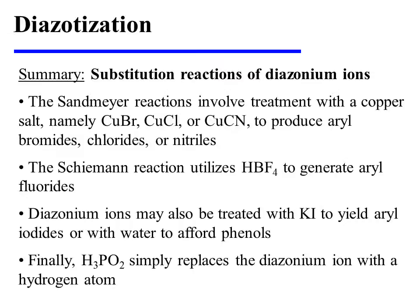The Sandmeyer reactions involve treatment with a copper salt — namely copper bromide, copper chloride, or copper cyanide — to produce aryl bromides, chlorides, or nitriles, respectively. The Schiemann reaction utilizes fluoroboric acid to generate aryl fluorides. Diazonium ions may also be treated with potassium iodide to yield aryl iodides, or with water to afford phenols. And finally, hypophosphorus acid simply replaces the diazonium ion with a hydrogen atom.